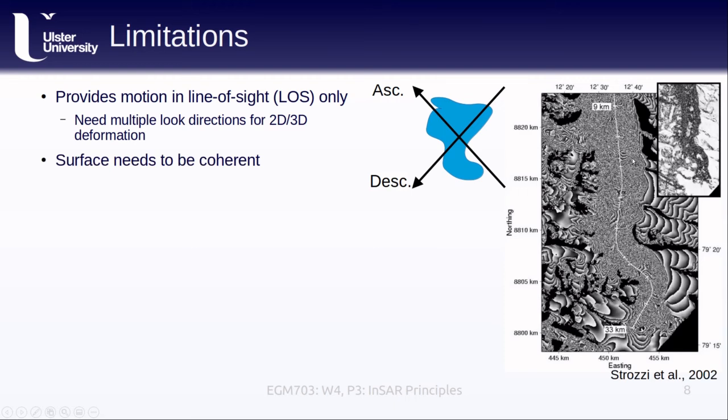The surface also has to be coherent. In the example here, we can see nice, clear interferometric fringes on some areas of this glacier, but we also see very noisy fringes in other spots. If the motion is too slow, then the surface can end up decorrelating due to seasonal changes, and we can't actually measure any motion. Similarly, we can't measure very fast changes using differential InSAR, because if the surface is moving quickly, it also ends up decorrelating.